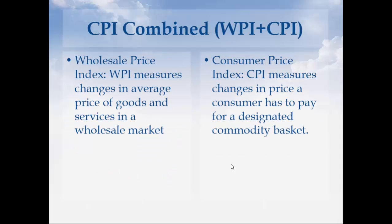There are two types of indices. One is Wholesale Price Index, the other one is Consumer Price Index. Wholesale Price Index measures changes in average prices of goods and services in a wholesale market. Consumer Price Index measures changes in the price a consumer has to pay for a designated commodity basket — a representative basket consisting of a particular list of commodities a consumer would normally use. CPI measures the price change for the commodities in that particular basket.